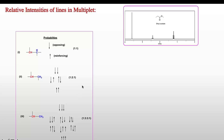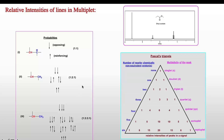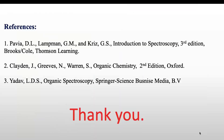Since we cannot always use the probability method, we use Pascal's triangle to get the intensity of multiplets. For a doublet the intensity ratio is 1:1; for a triplet it is 1:2:1; for a quartet it is 1:3:3:1; for a quintet it is 1:4:6:4:1 — and so on. In general, if there are more than 7 peaks we simply call it a multiplet. Thank you very much and have a nice day.